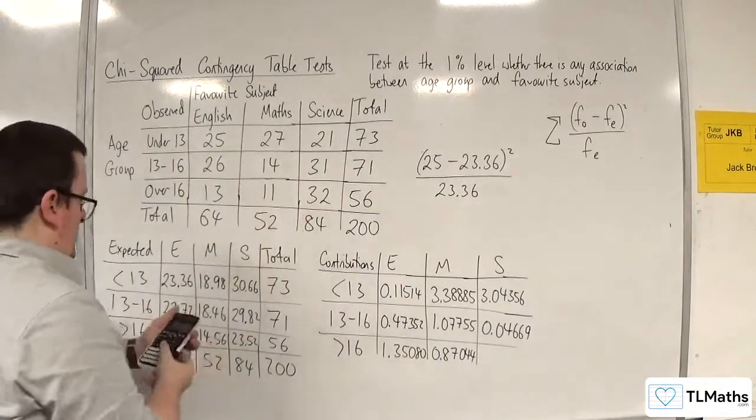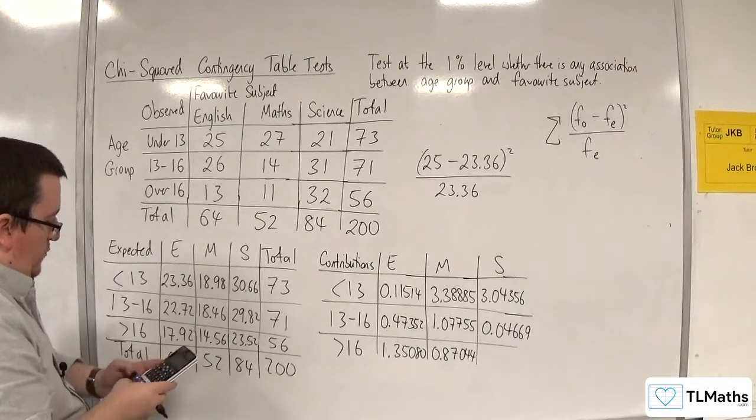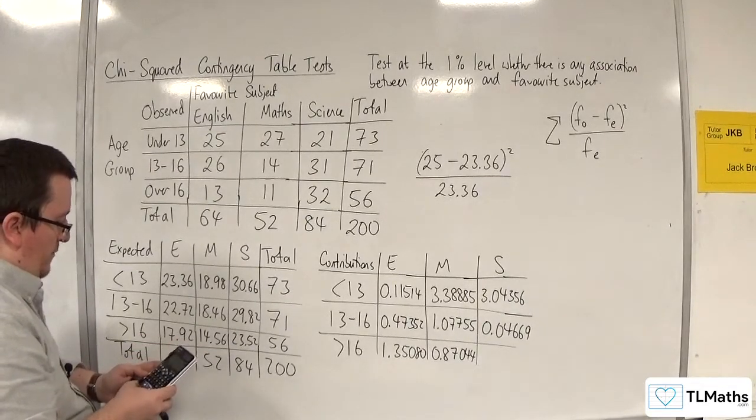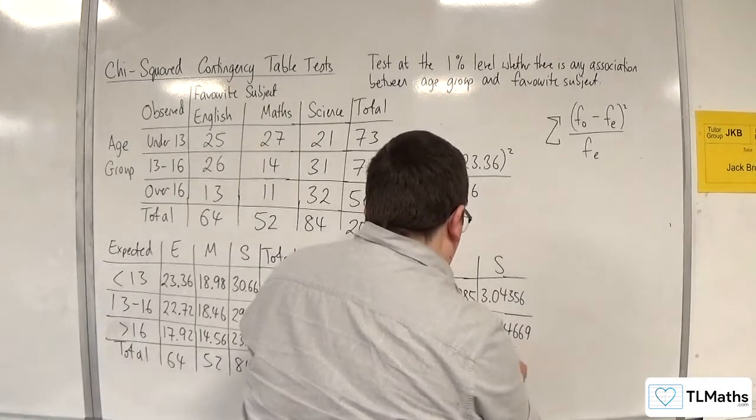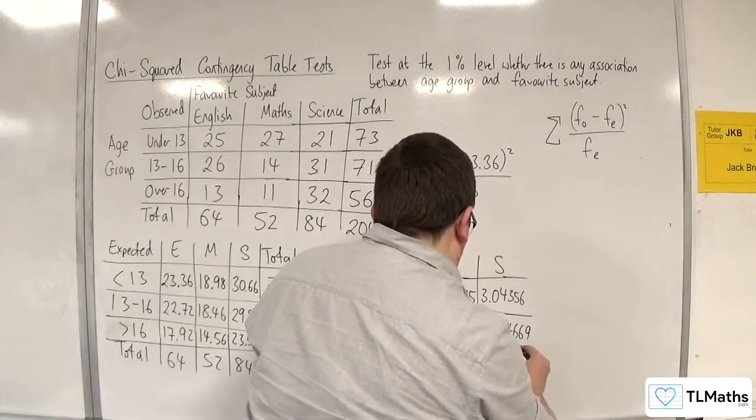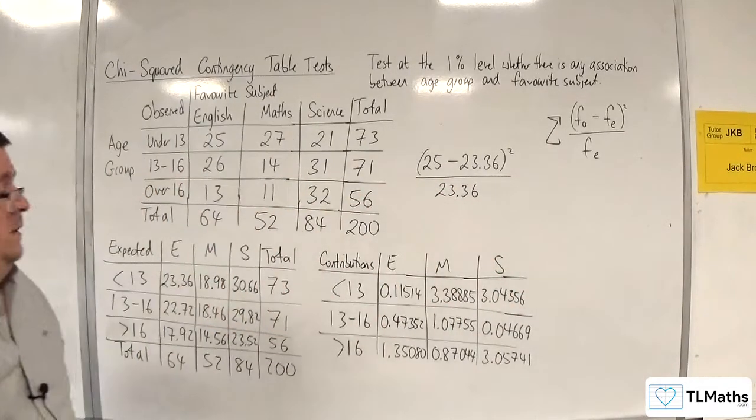Last one. 32 take away 23.52, squared, divided by 23.52. Gets me 3.05741.